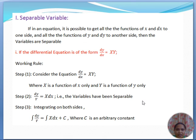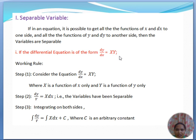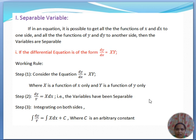The separable variable method simply requires us to separate the variables. There are three forms. The first form is any differential equation in the form dy/dx = X·Y, where X is a function of x only and Y is a function of y only. In this case, we just separate the variables and integrate both sides to get the solution. At the end we must add a constant c — if you forget to add constant c, it is not a general solution.